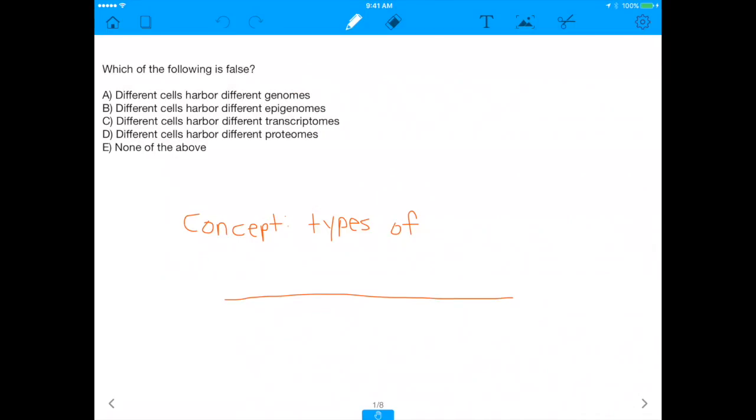It says, which of the following is false? Different cells harbor different genomes, different cells harbor different epigenomes, different cells harbor different transcriptomes, and last but not least, different cells harbor different proteomes. And E is none of the above. I know none of the above is usually like a bailout answer choice, but nonetheless, it's important.